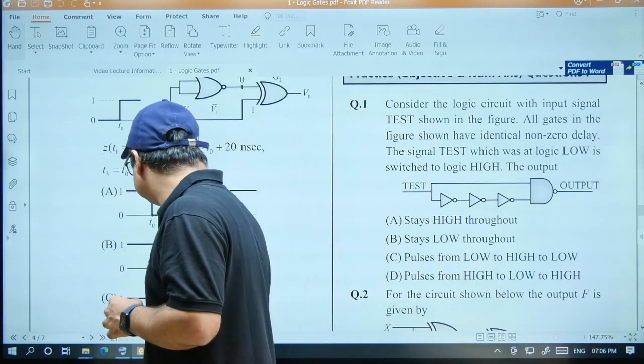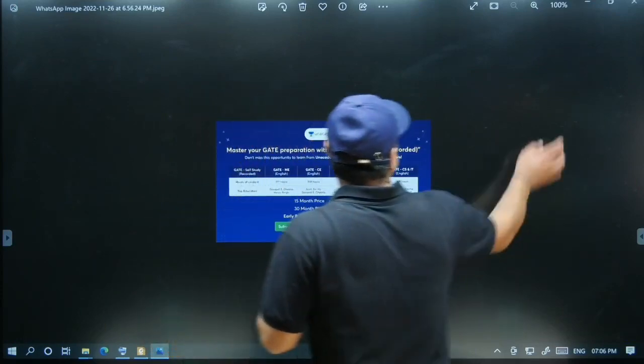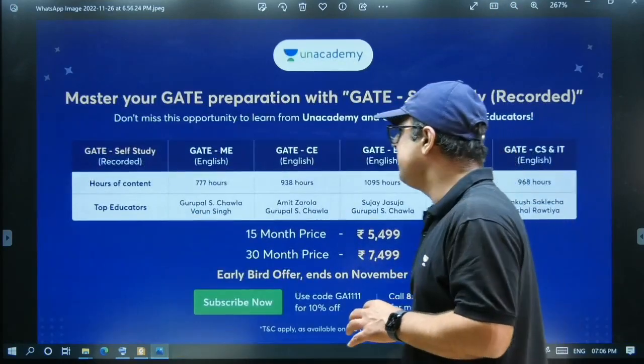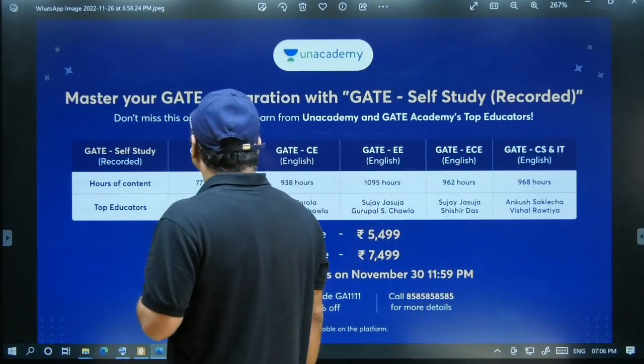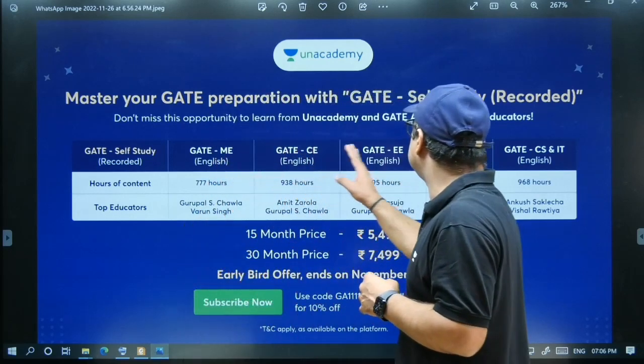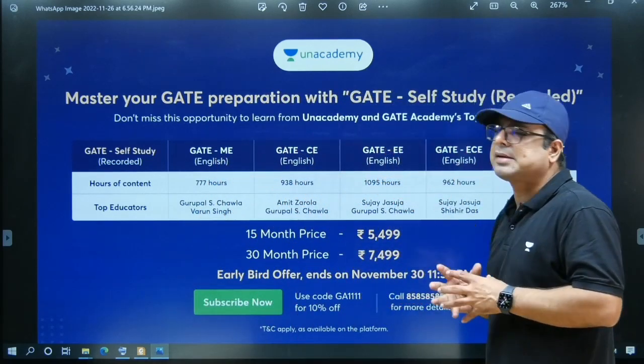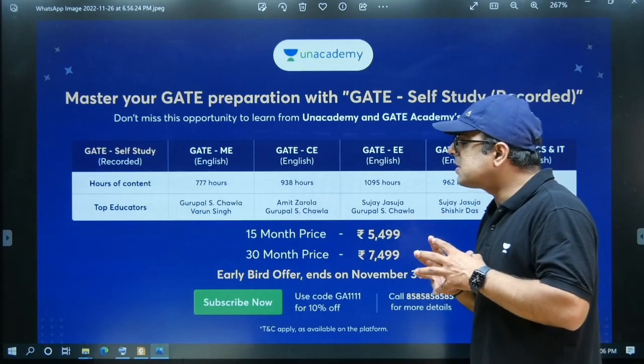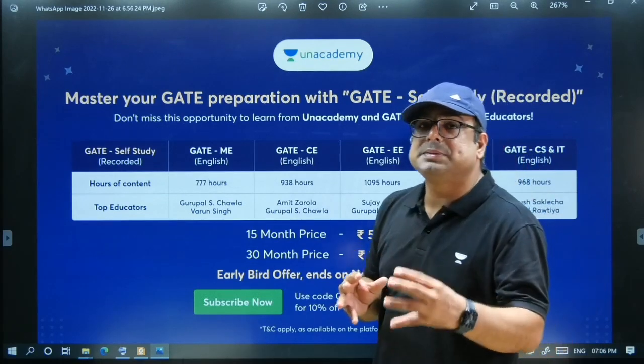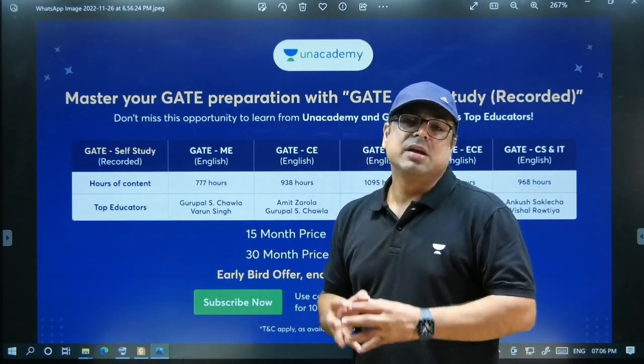To tell you more details about this course, this course is presently available in Mechanical, Civil, Electrical, and Electronics. You would be surprised to know the pricing. Yes, it is very affordable. Fifteen months is only 5,500 rupees.